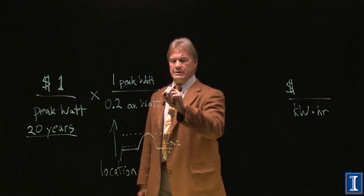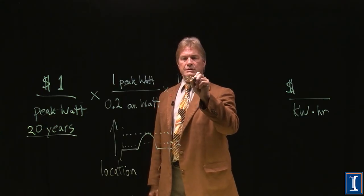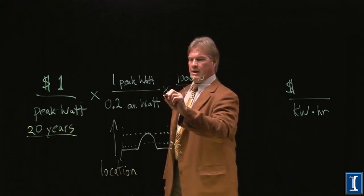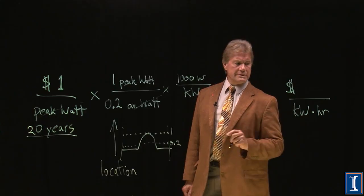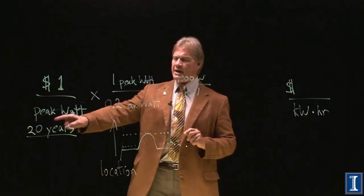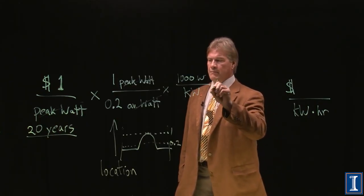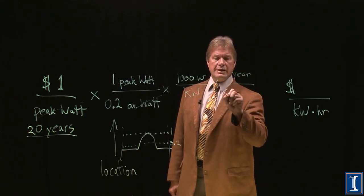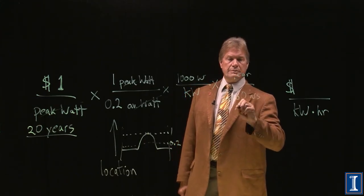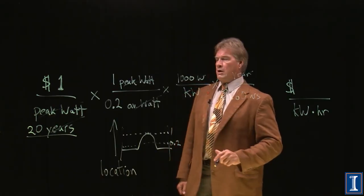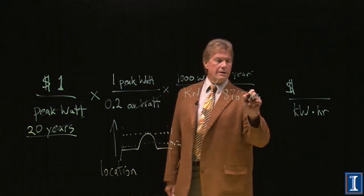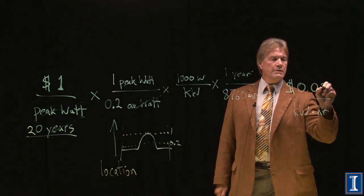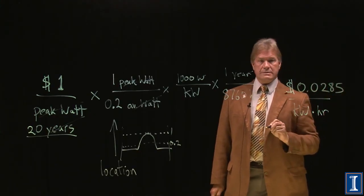But I want kilowatts. Well, that one's pretty easy, right? So there's 1,000 watts per kilowatt. Okay, kilowatts on the bottom. Watts cancel. What about this time I need here, this hours? And how do I utilize the fact this is going to last for 20 years? Well, we've got time on the bottom in years, so we just have to know that one year is 8,760 hours. Years will cancel out. What I'm left with is dollars per kilowatt hour. If I multiply these numbers together, including the 20 down here, this comes out to be 2.85 cents per kilowatt hour.